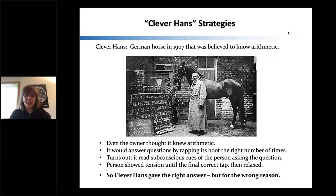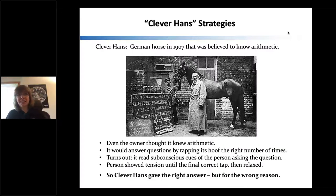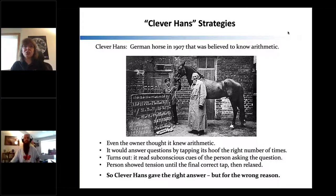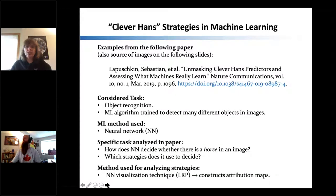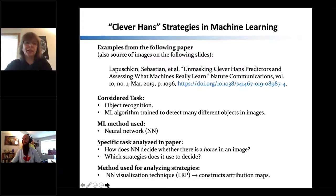The key point is that Clever Hans gave the right answer but for the wrong reason. Clearly it didn't know arithmetic, but there was a strong correlation between the person asking the question's behavior and the correct answer. The horse picked up on that correlation. In machine learning, you can also get Clever Hans strategies — methods can pick up the wrong correlations that don't generalize.